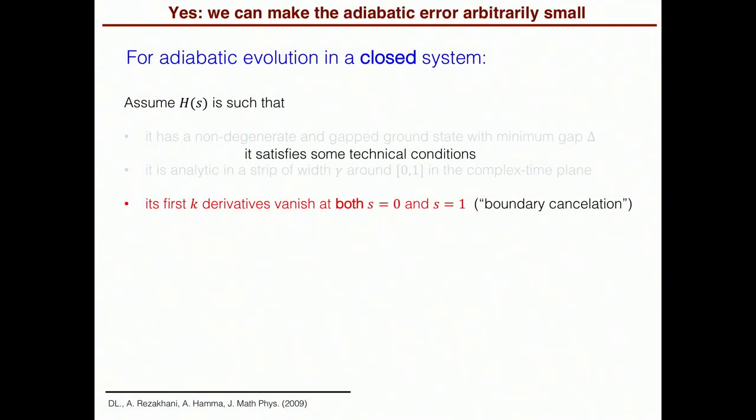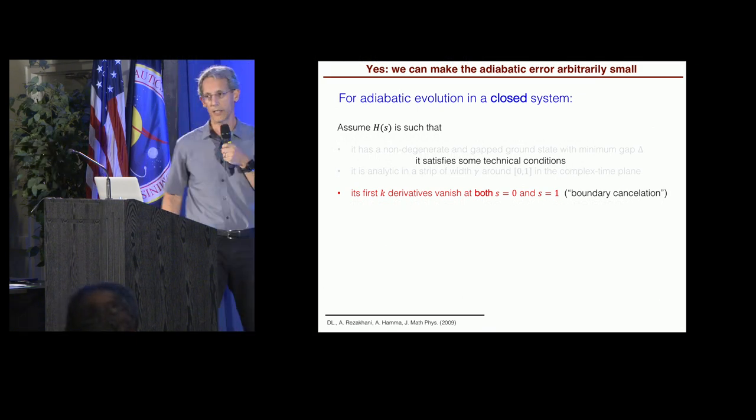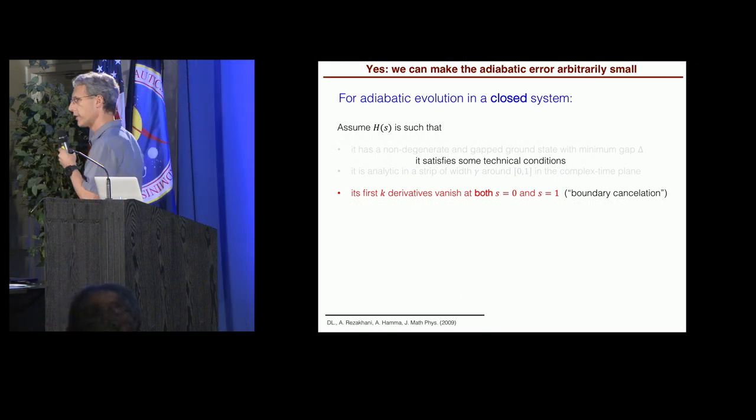So consider the closed system case still. Let's say we have Hamiltonian that depends, again, only on a single time parameter, s. And it satisfies some technical conditions. And the important thing, the interesting thing, is what happens at the boundaries. The first k derivatives of the Hamiltonian are assumed to vanish at both the beginning and the end. All right. So this is the technique that also Lucas referred to as boundary cancellation.